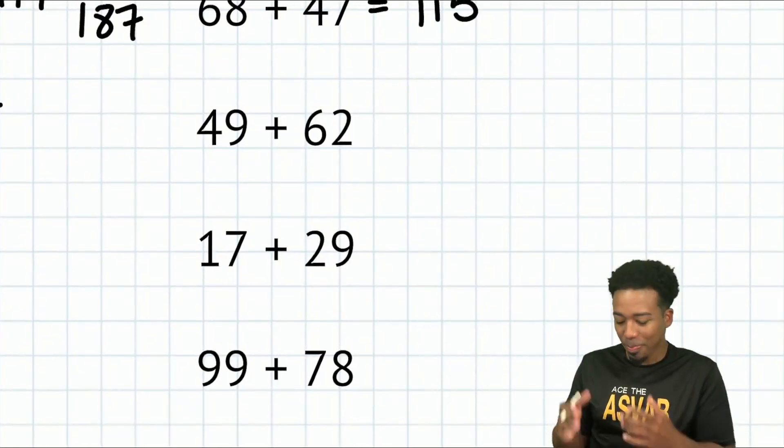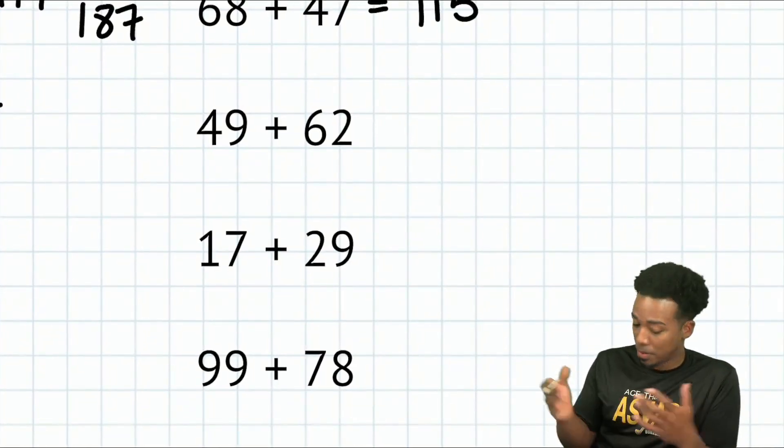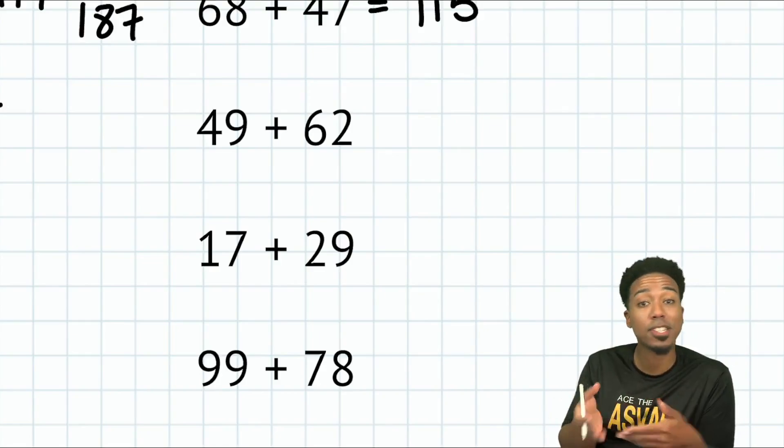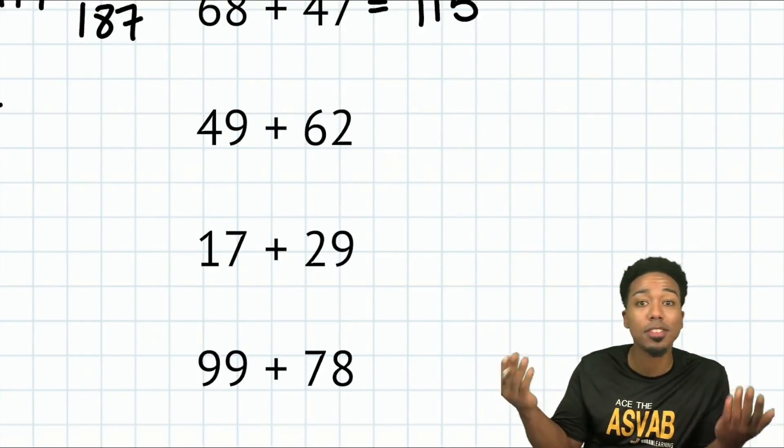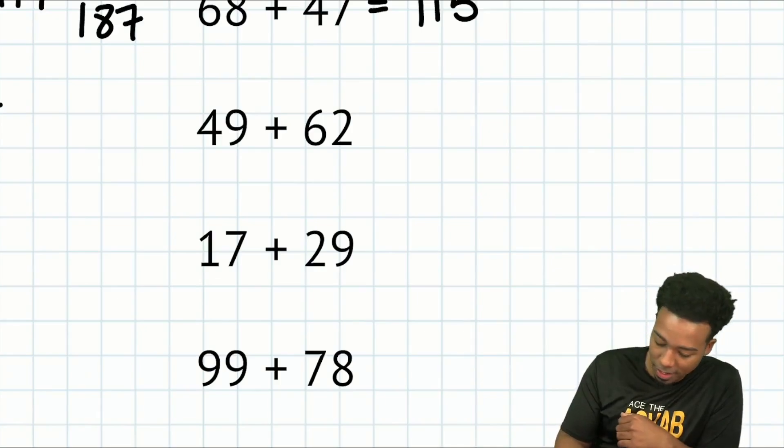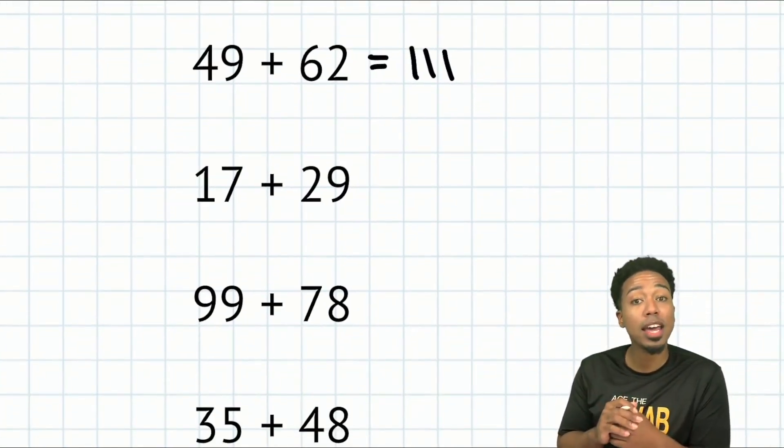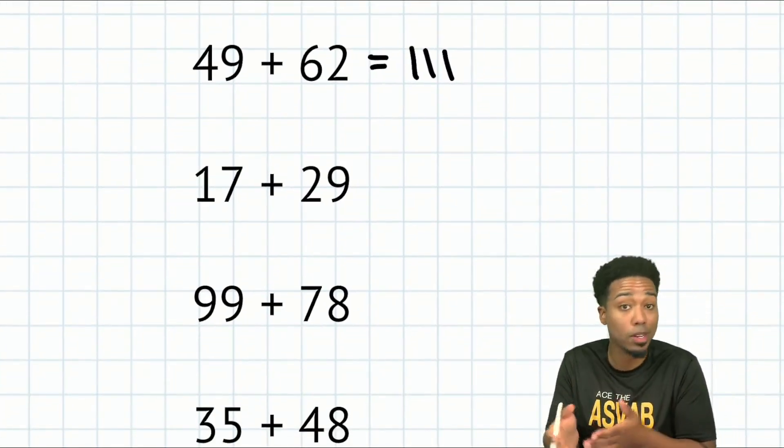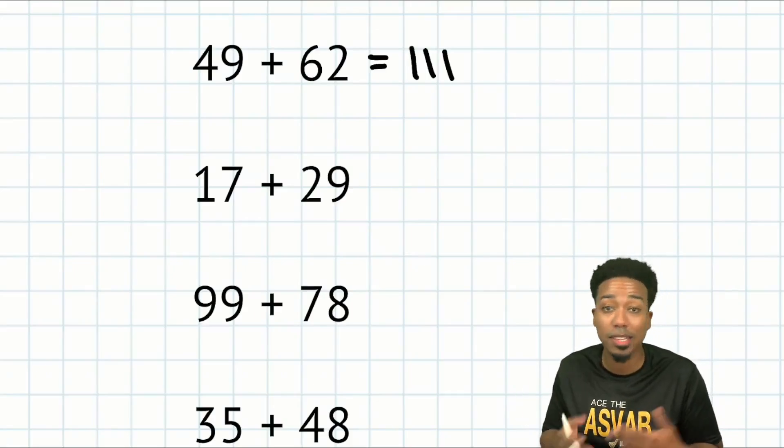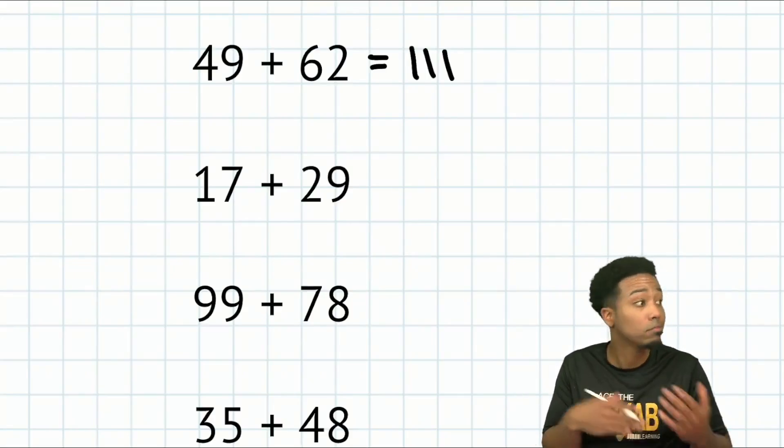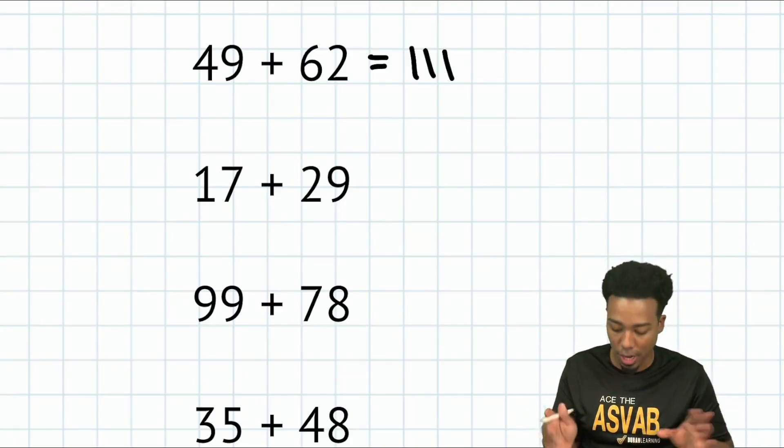Next up, 49 plus 62. Well, what's this going to be? 40 plus 60 is 100. 9 plus 2 is 11. 111. Done. All good. 17 plus 29. Well, it's 10 plus 20, 30. 7 plus 9 is 16. 30 plus 16, 46. And you're done.